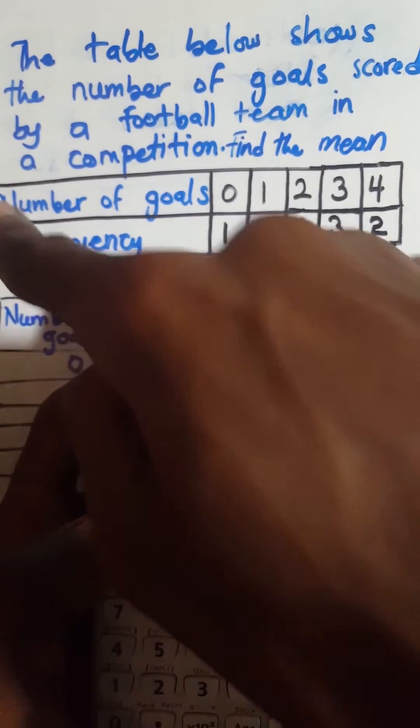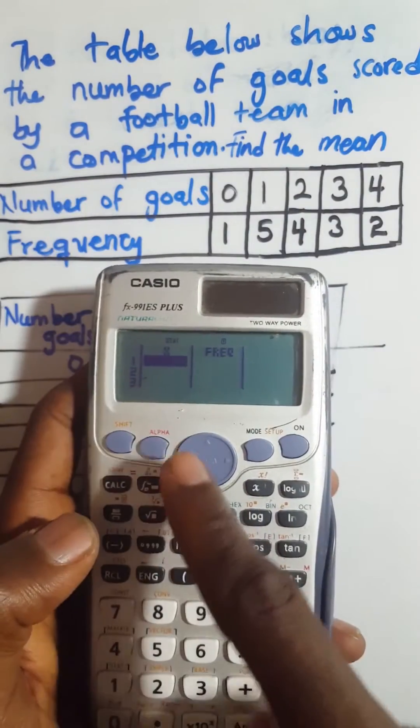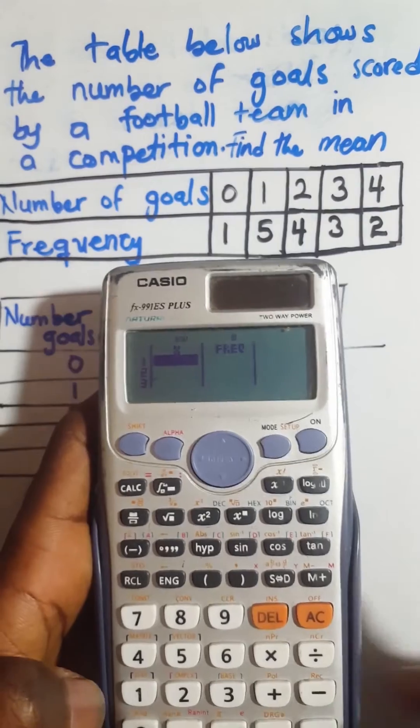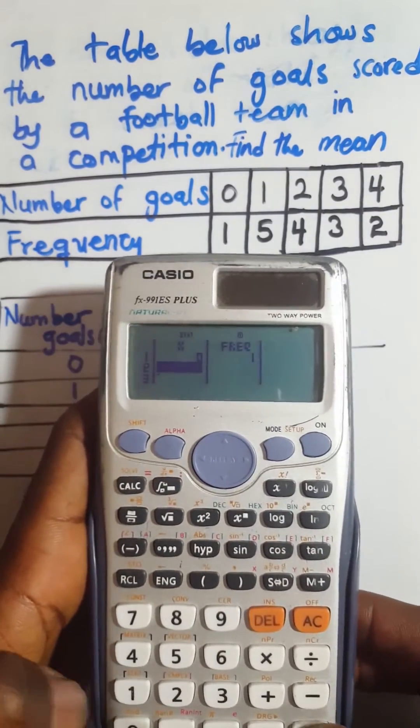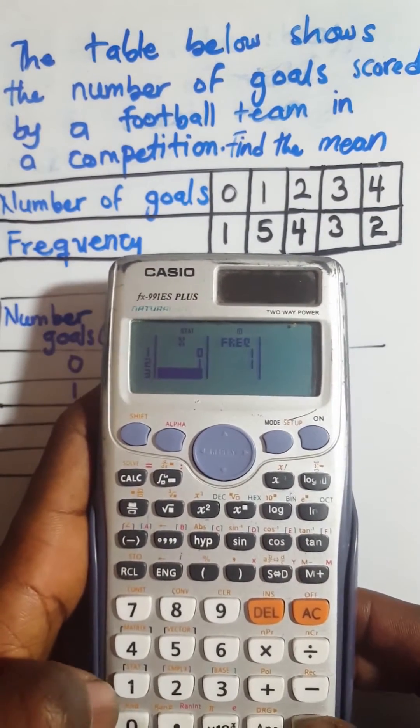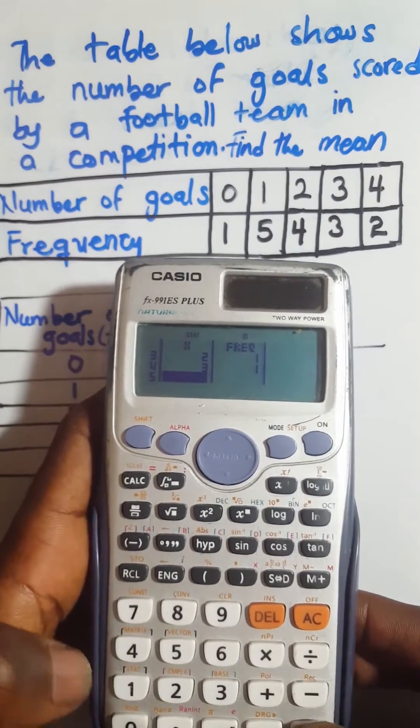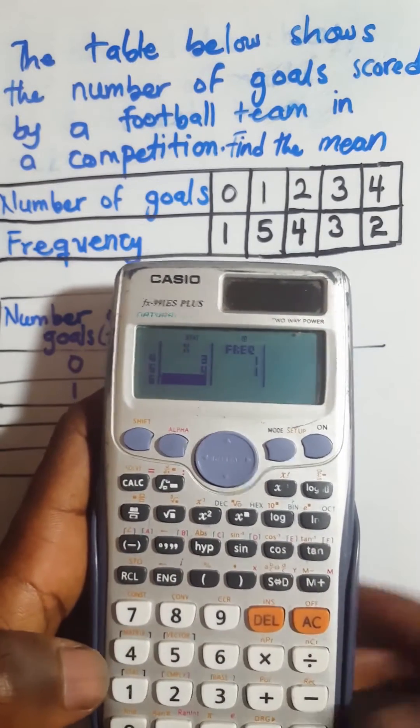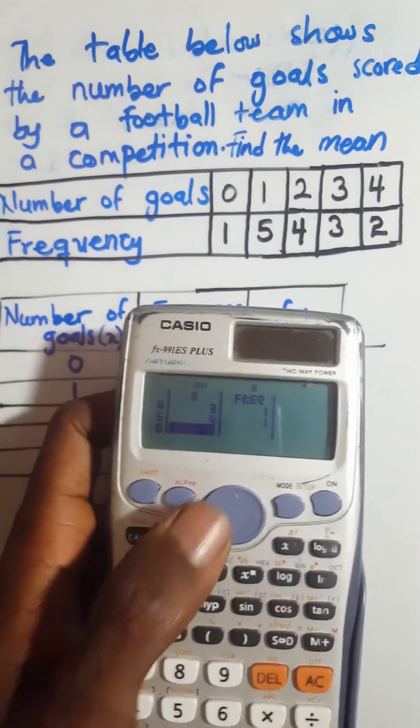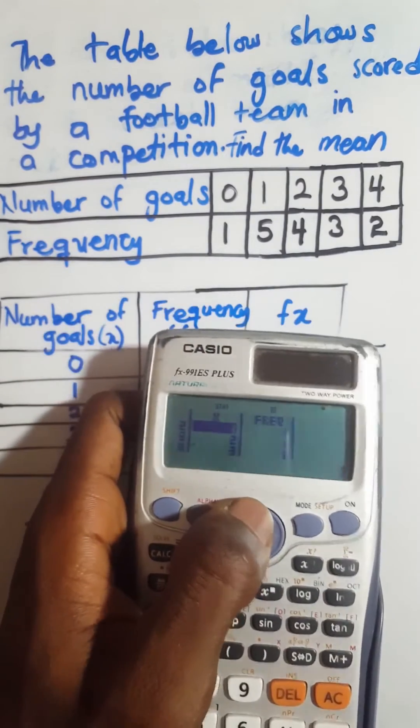So for the number of goals we are going to enter the x button or the x section. So 0, then you press equal to, 1 you press equal to, 2 you press equal to, 3 you press equal to, and then 4 you press equal to.